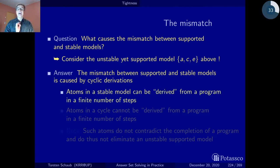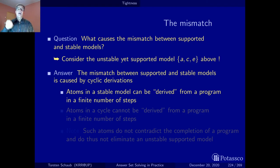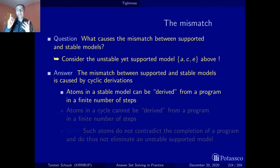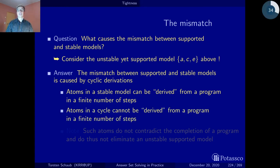Keep in mind: atoms in a stable model are all derived from a program in a finite number of steps, taking away the negative body literals. Every atom that is in a stable model has a derivation from the facts. The atom e here was derived from a self-referential rule which could not provide us with a finite derivation tracing back to the facts. Hence, atoms in such a cycle cannot be derived in a finite number of steps — these are the ones we have to eliminate.